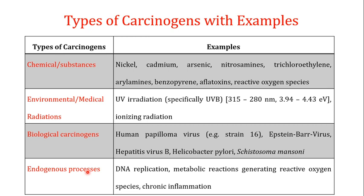The fourth type of carcinogens are known as indigenous processes — processes happening inside the cell that are responsible for causing cancer. For example, during DNA replication, the DNA polymerase does make some mistakes, but due to its proofreading ability most mistakes are corrected. However, sometimes problems in DNA replication can be a cause of cancer. Metabolic reactions generating reactive oxygen species or chronic inflammation are also mechanisms happening inside the cell placed under indigenous processes.